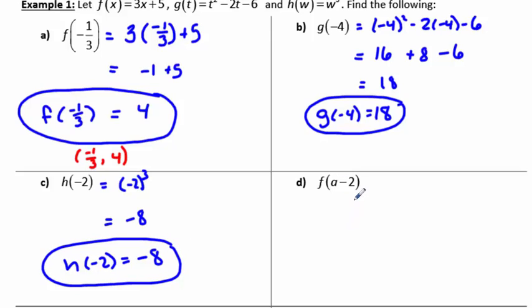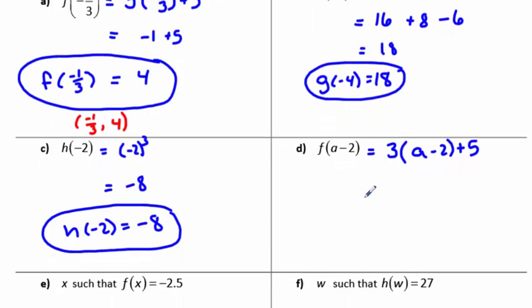In part d, I want to plug in the expression a minus 2 to the function f. The function f was 3 times x, replacing x with the input of a minus 2 plus 5. So this was 3x plus 5. x has been replaced with this expression a minus 2. We want to simplify this. So simplifying, I'm going to get 3a minus 6, if I use the distributive property, plus 5. And then combine your like terms, so you're going to be left with 3a minus 1.